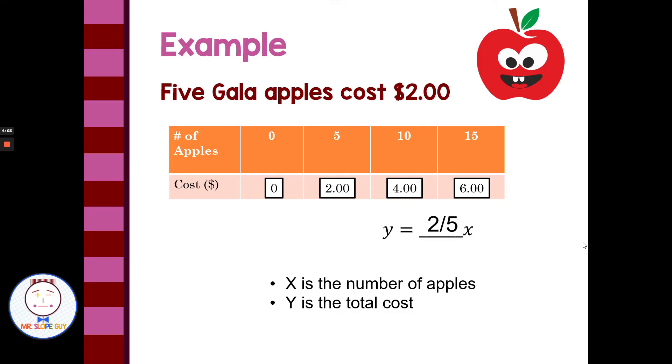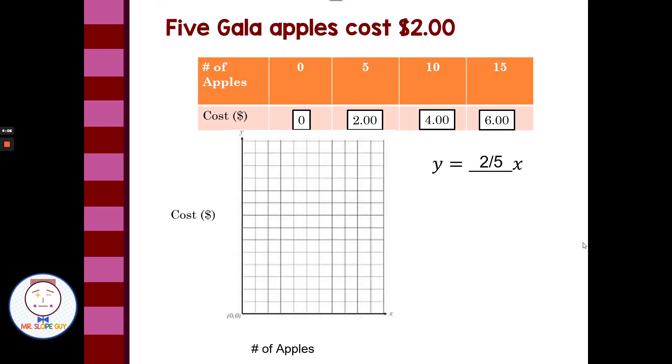If we look at a graph, we can do number of apples and cost in dollars. Zero apples, zero dollars. Five apples, $2. If I'm counting by twos, fives could be halfway between four and six to be two dollars. Ten apples, $4. Fifteen apples, $6. That makes a graph of our proportional relationship.